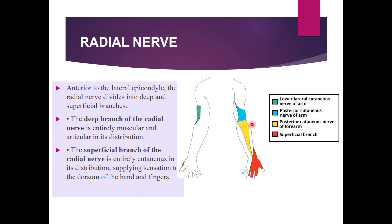Anterior to the lateral epicondyle, the radial nerve divides into deep and superficial branches. The deep branch is entirely muscular and articular in distribution — this is the posterior interosseous nerve supplying the muscles of the posterior compartment of forearm. The superficial branch is entirely cutaneous, supplying sensation to the dorsum of the hand and the lateral three and a half fingers — excluding the nail beds, which are supplied by the median nerve.